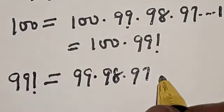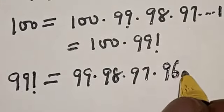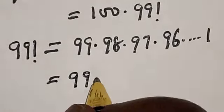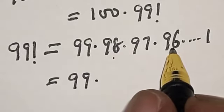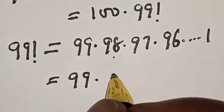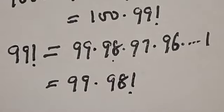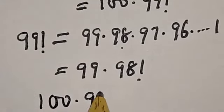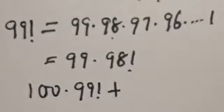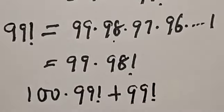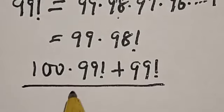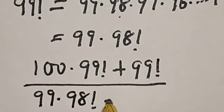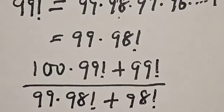...up to 1, which is simply 99 multiplied by 98 factorial. Now let's substitute: we have 100 multiplied by 99 factorial plus 99 factorial, divided by 99 multiplied by 98 factorial plus 98 factorial.